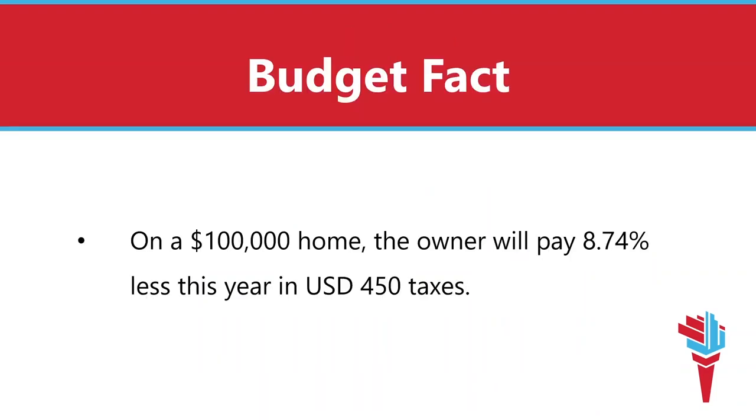The key point is that based on the example in the news — a $100,000 home with a 5.5% property increase — the homeowner will actually pay 8.74% less in taxes this year. I do want to be transparent: it would not be accurate to say that all homeowners will see an 8% decrease. It's not that simple, as the percent will change as the home value increases. The $75,000 exemption does not have the same impact on a $200,000, $300,000, or $400,000 home.